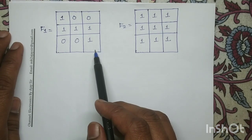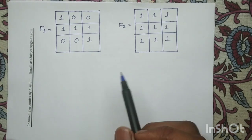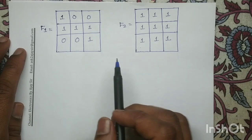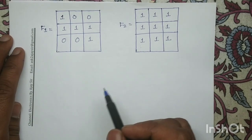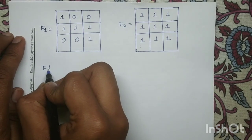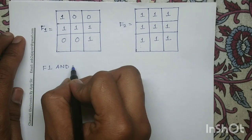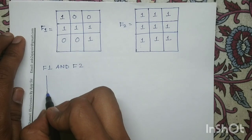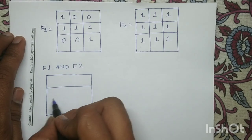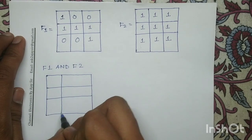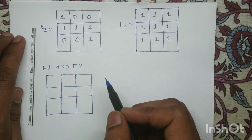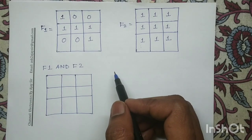This is image F1 and this is image F2. In order to perform the arithmetic or logical operation, the dimensions of F1 and F2 must be identical. In this case, both F1 and F2 are 3x3, so we can perform the logical operations. Our output image dimension will also be 3x3. Now we will perform the bitwise logical AND operation.